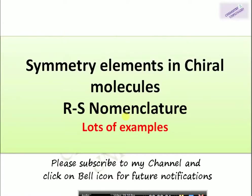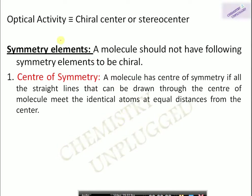Hello friends, welcome back to my channel Chemistry Unplugged. Today we will discuss symmetry elements in chiral molecules and R and S nomenclatures with lots of examples. Please subscribe to my channel and click the bell icon for future notifications. First is optical activity — optical activity of a compound can be determined by a chiral center or stereocenter.